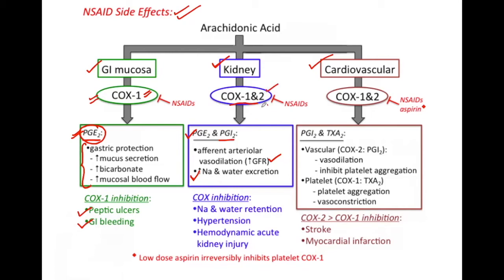Because when both COX-1 and COX-2 are inhibited, there won't be production of prostaglandins E2 and I2 (prostacyclins). This can lead to increased sodium and water retention, hypertension, and disturbance in the hemodynamic action of prostaglandins, resulting in acute kidney injury or renal failure.